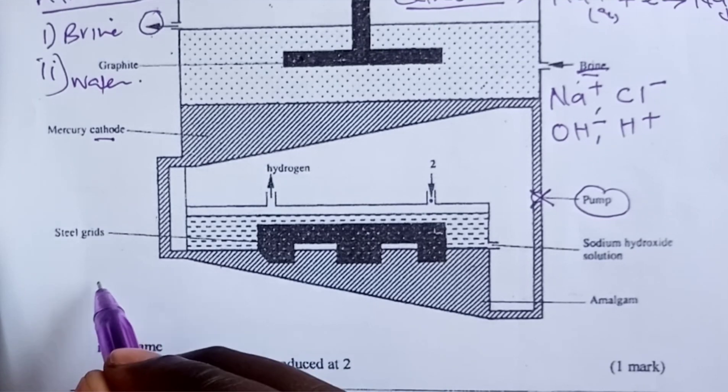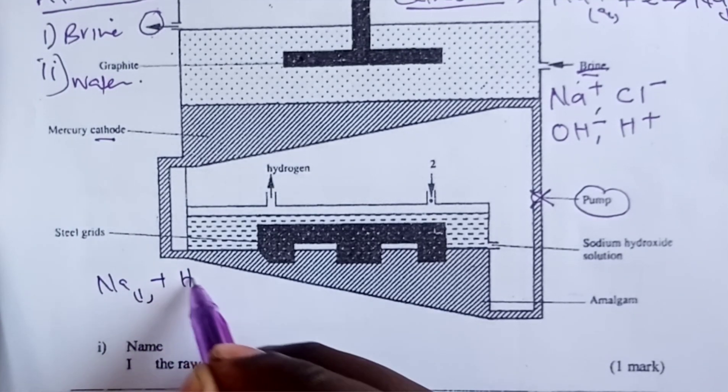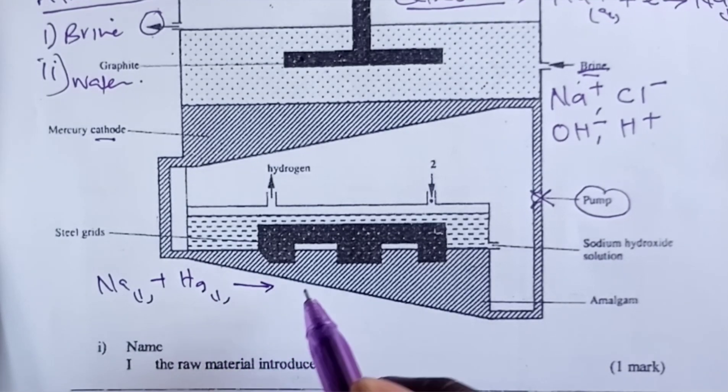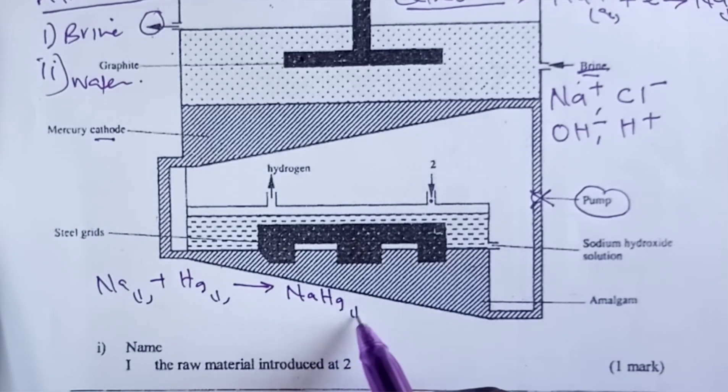Sodium in liquid form combines with mercury, which is solid, and we are able to form sodium mercury amalgam.